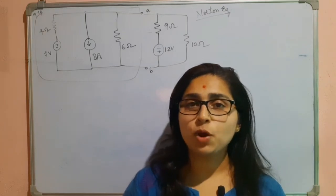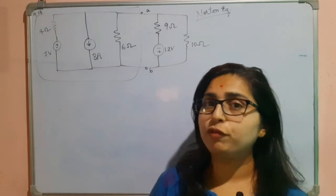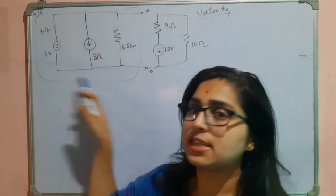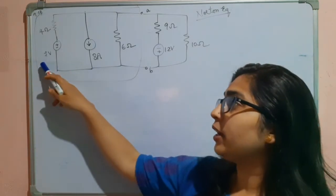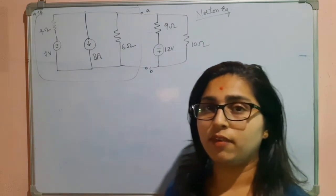Hello everyone, in this problem we are asked to find the Norton's equivalent to the left of terminals A and B. Here that means the one which is inside the box. We have one independent voltage source and one independent current source. So let us find the Norton's equivalent.